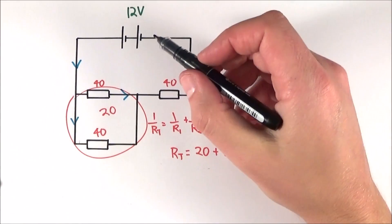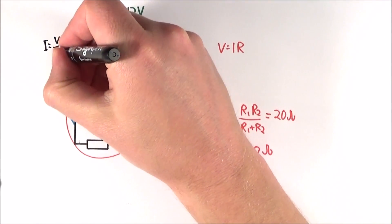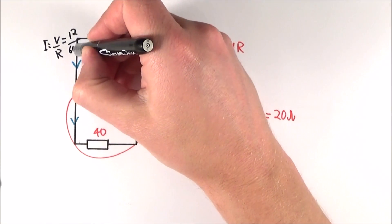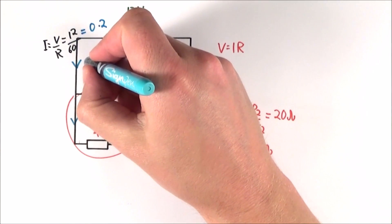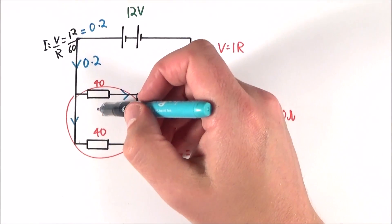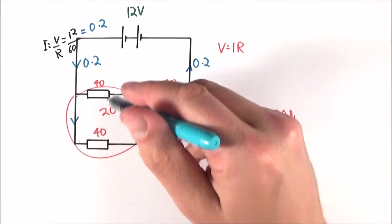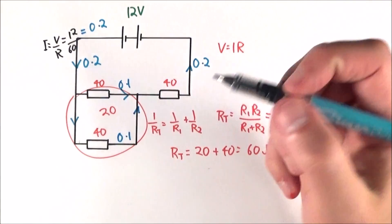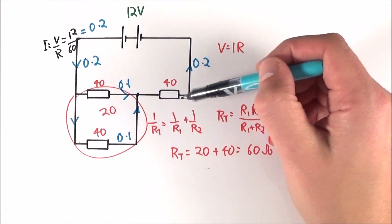Using I equals V divided by R, with 12 volts divided by 60 ohms, the current in the main part of the circuit is 0.2 amps. Because the two parallel resistors have equal resistance, the current splits equally: 0.1 amps flows through each branch. Applying Kirchhoff's first law at the junction, 0.1 plus 0.1 equals 0.2 amps flowing out — which matches the incoming current.